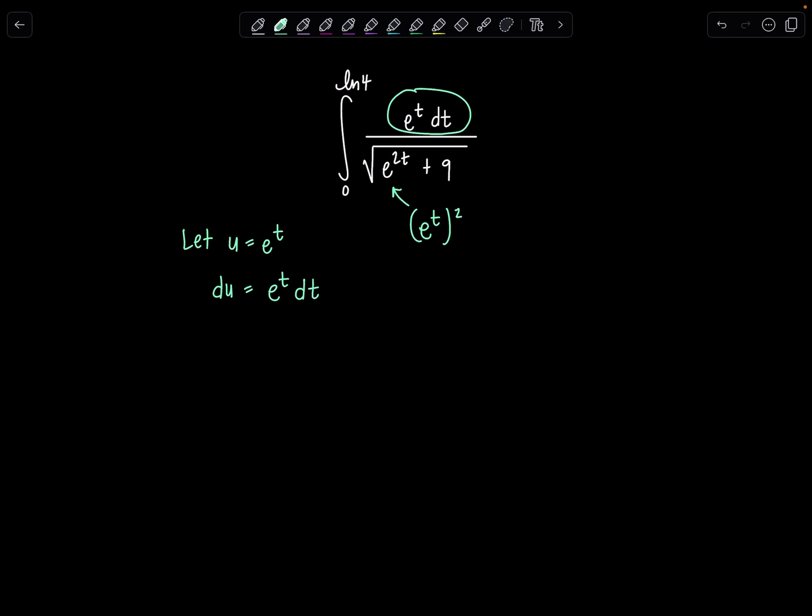The only thing I have left to do is change my limits of integration. So remember, these limits here, natural log of 4 and 0, belong to the variable t. So I'm going to substitute them in for t to get the new limits in terms of u. u of 0 will be e to the 0, which is 1. And then u of natural log of 4 is e to the natural log of 4, which is 4.